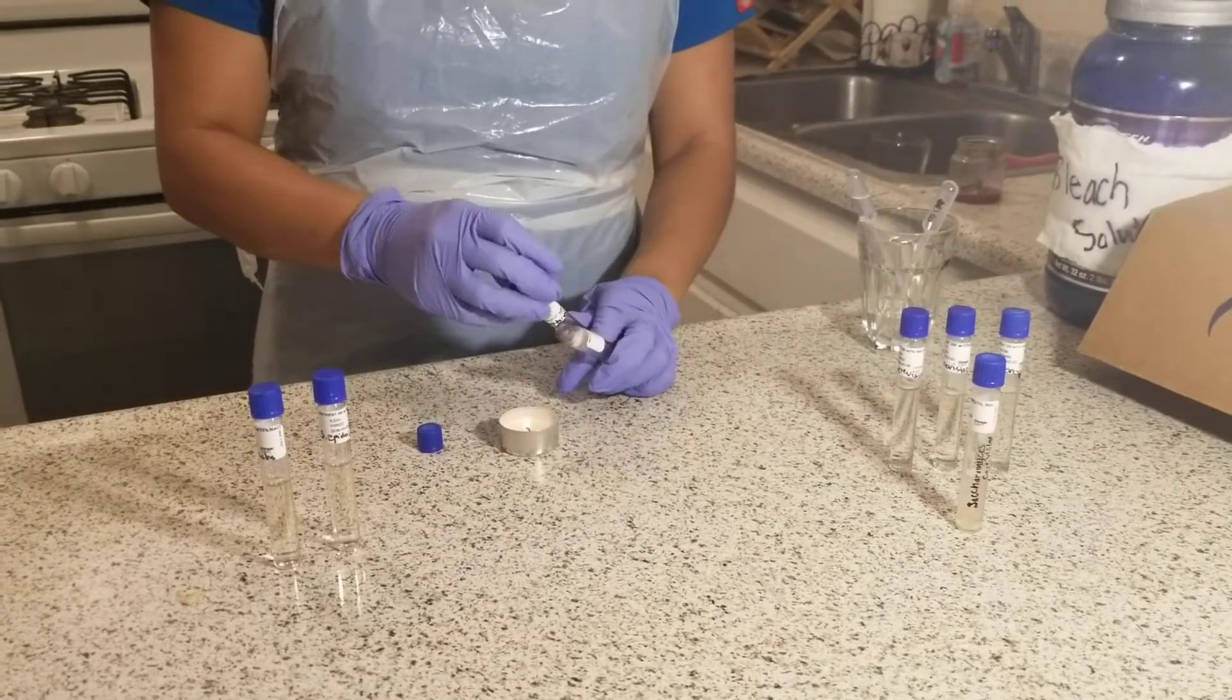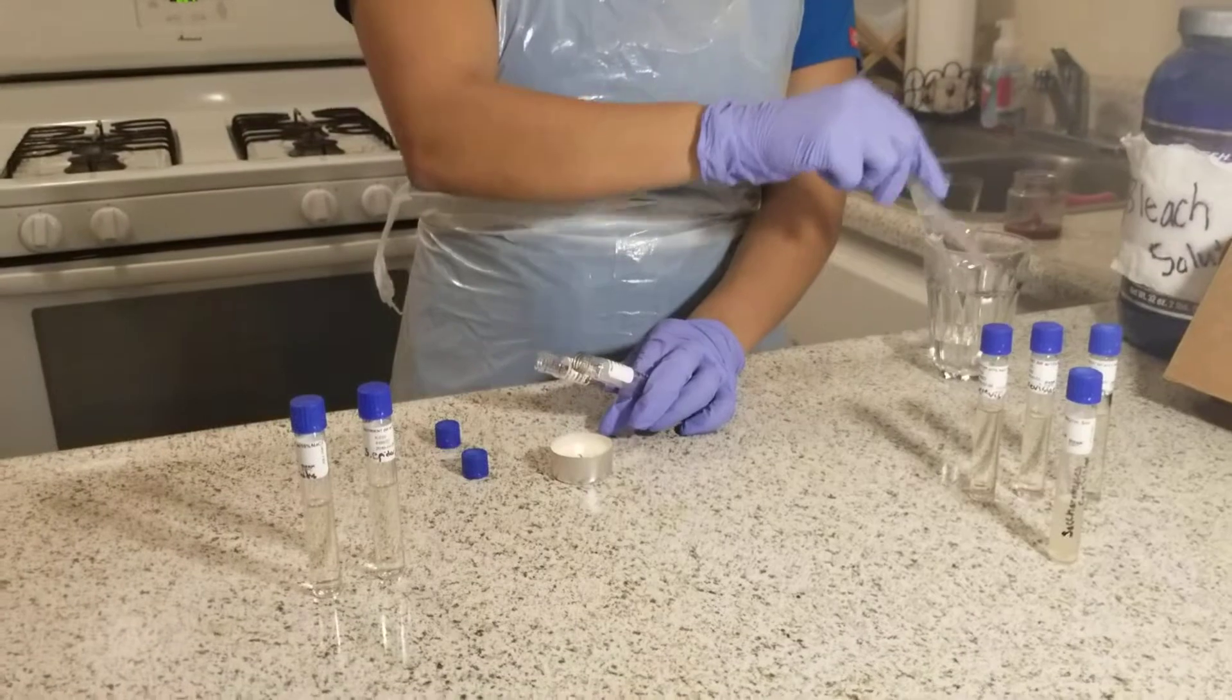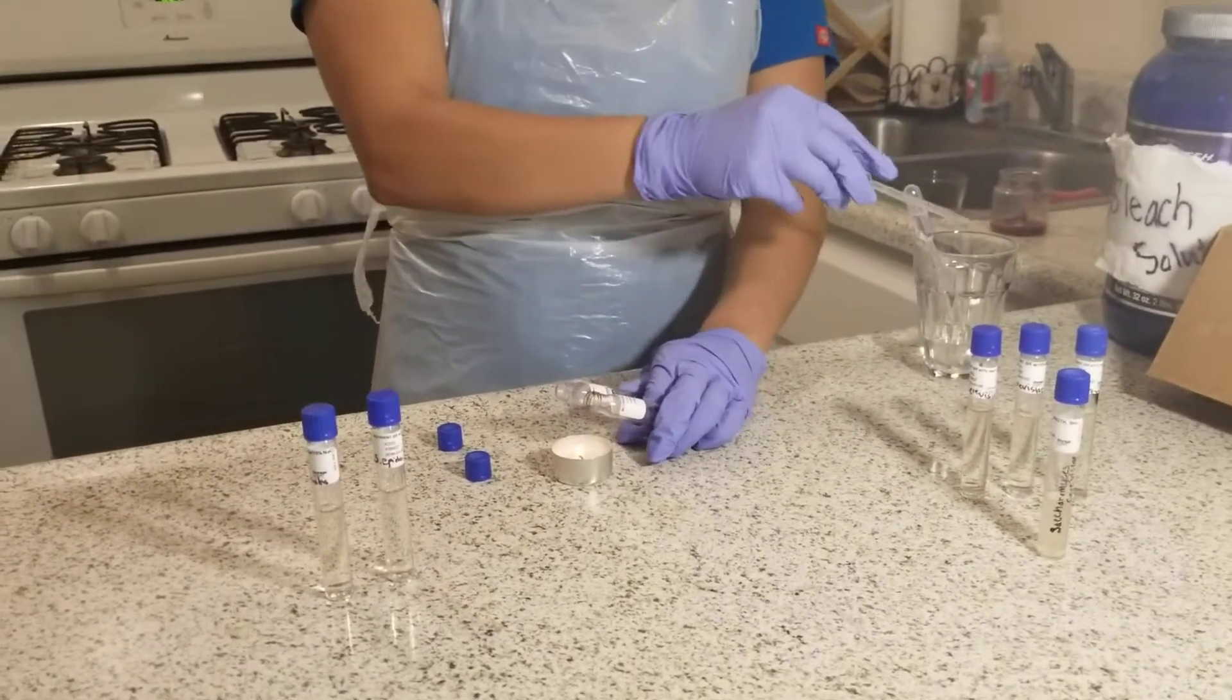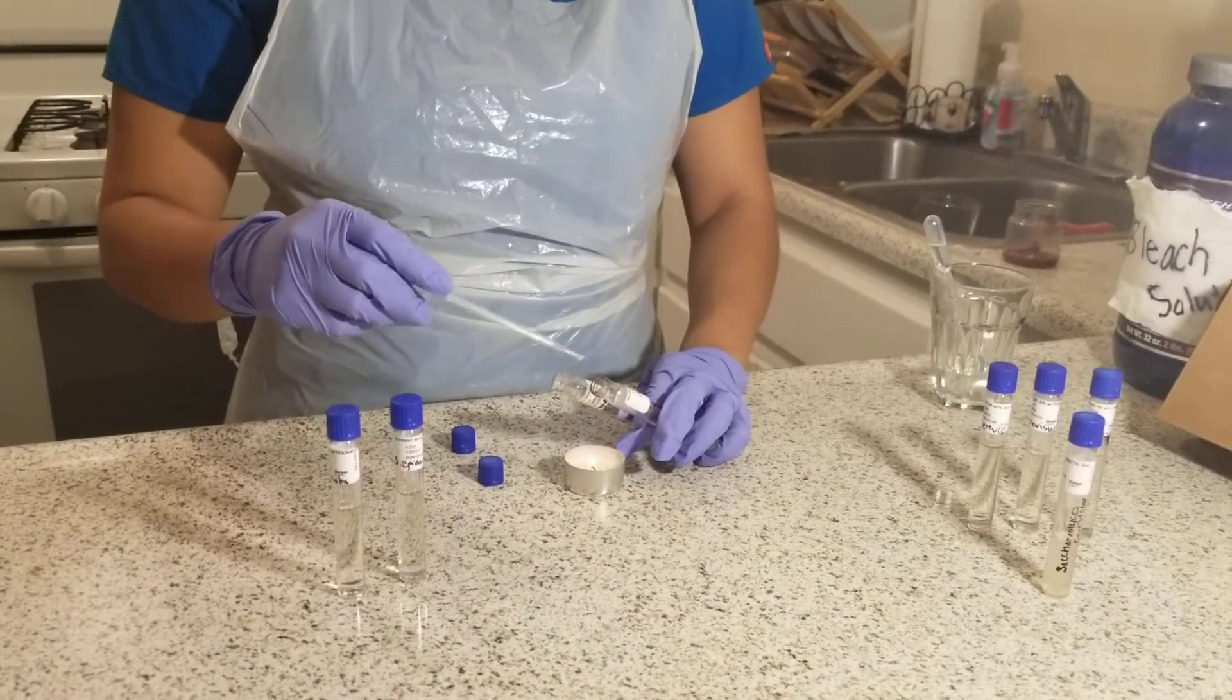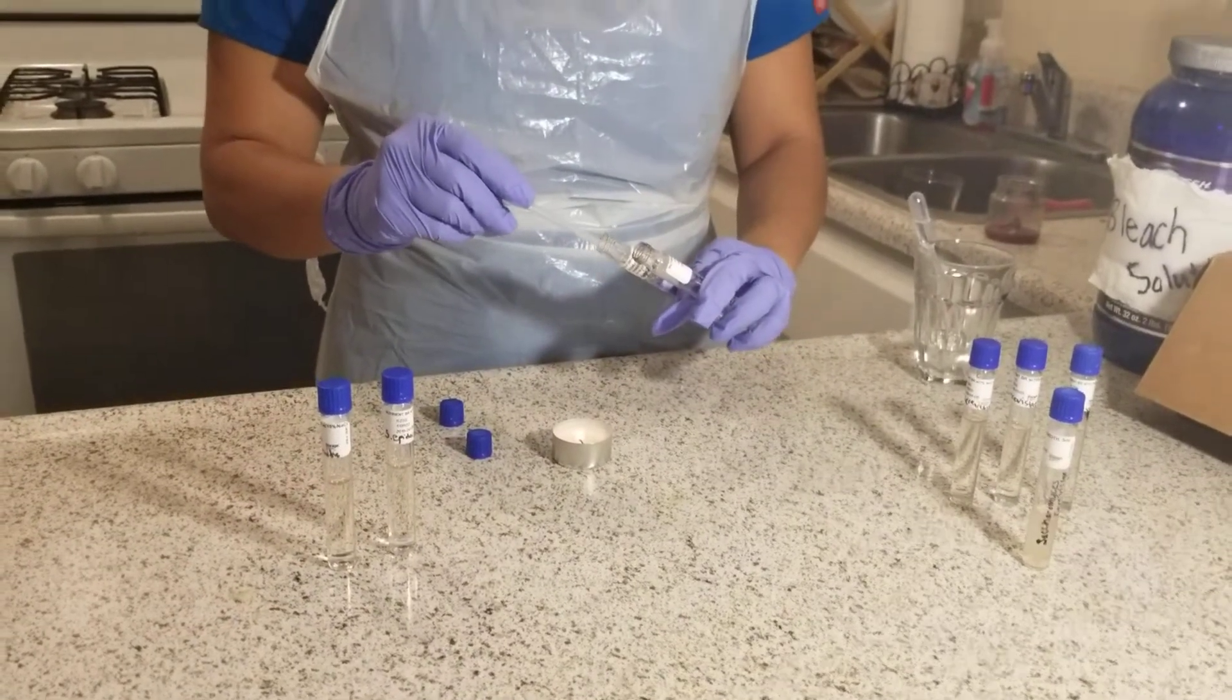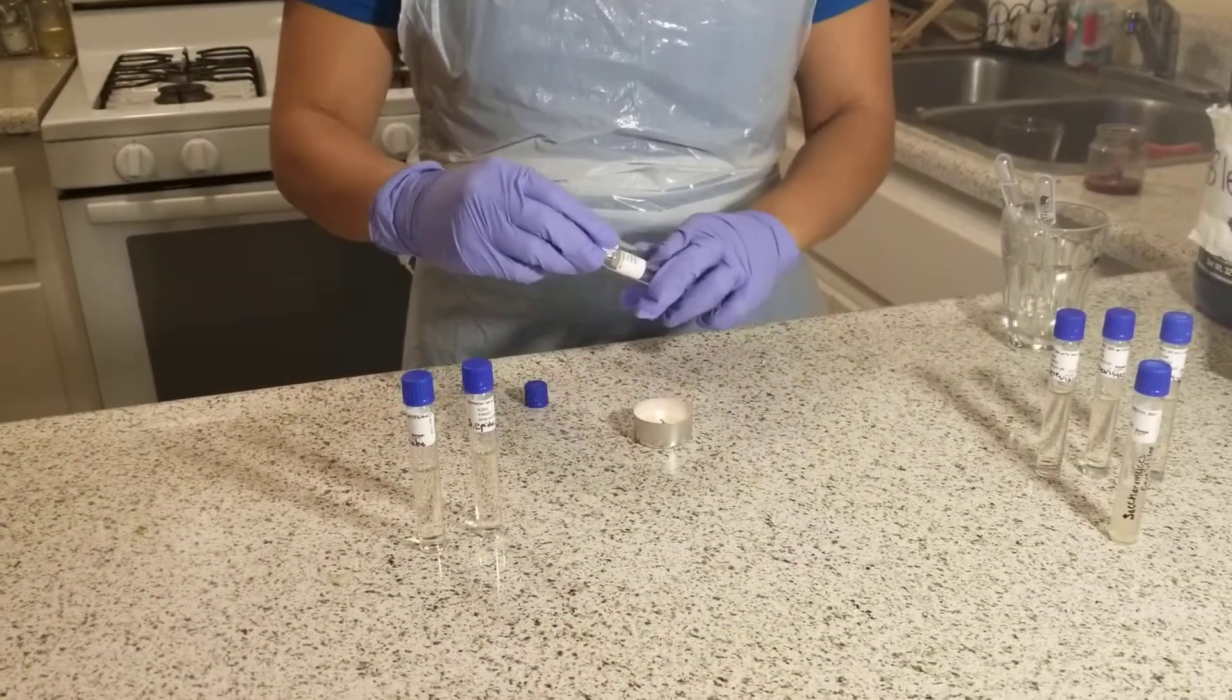I'll take my pipette that's been sitting in alcohol and make sure it's dry. Then I'm going to collect 2 drops from my S. epidermidis broth and transfer them to the sodium chloride solution. Then I'll sterilize the lids of both and recap.